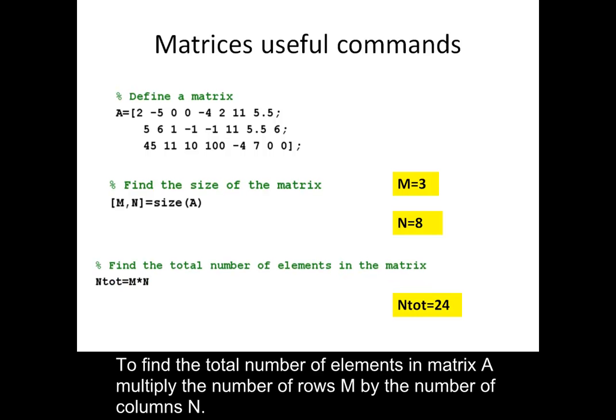To find the total number of elements in matrix A, multiply the number of rows, M, by the number of columns, N.